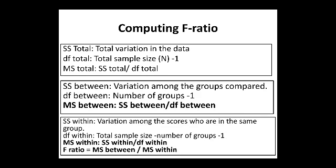Sum of squares within is the variation among the scores within the same group. Degree of freedom within equals total sample size minus the number of groups minus 1. Mean sum of squares within equals sum of squares within divided by degree of freedom within. The formula for F-ratio is mean sum of squares between divided by mean sum of squares within.